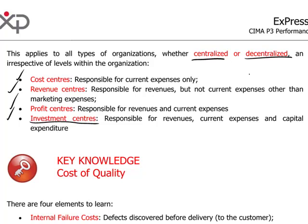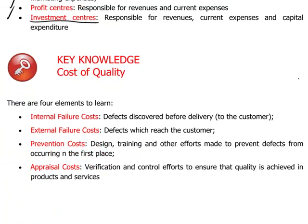Finally, there are costs of quality and four elements that one should keep in mind. They fall into four categories: internal failure costs, external failure costs, prevention costs, and appraisal costs. This also falls within the area of responsibility of management to ensure that quality is achieved.